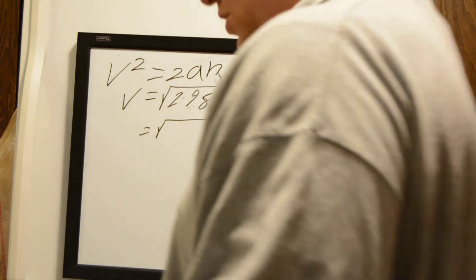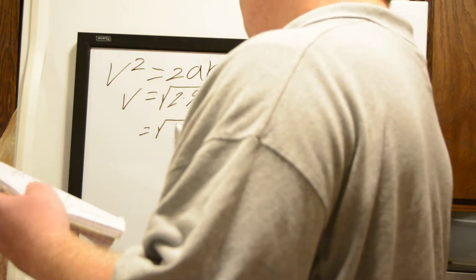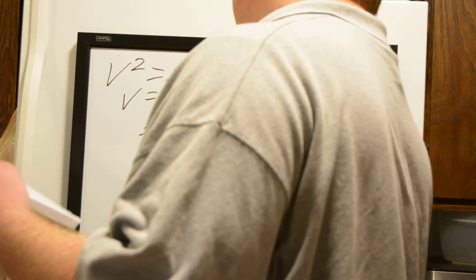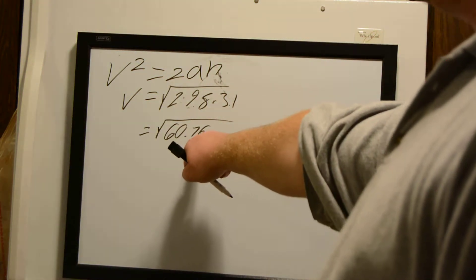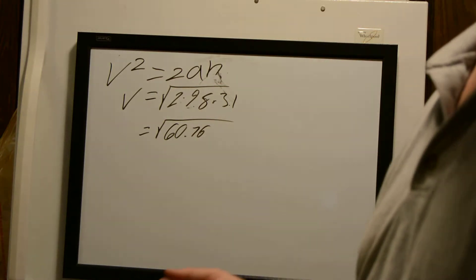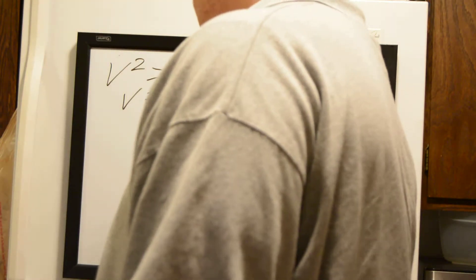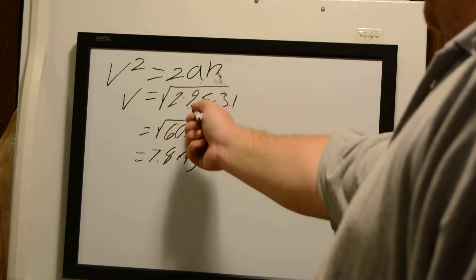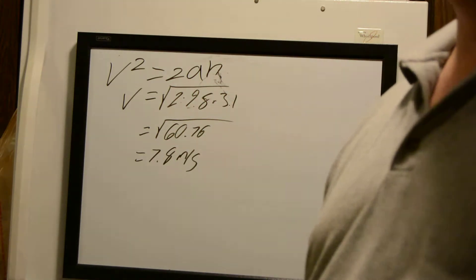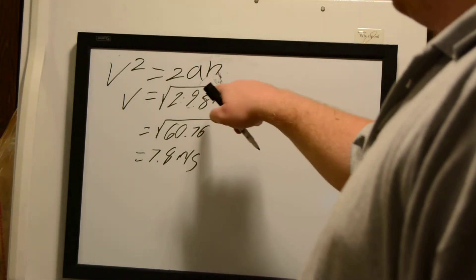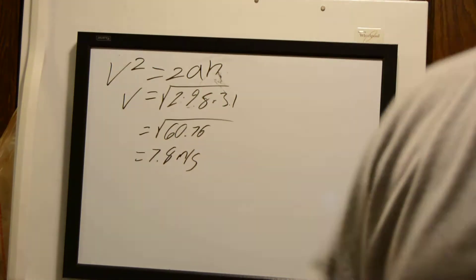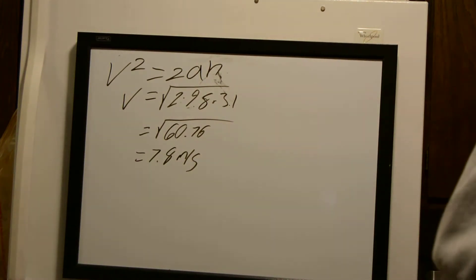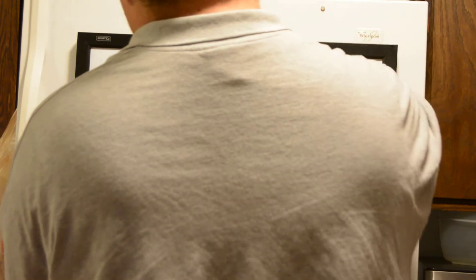Doing the math, that becomes the square root of 60.76. We keep an additional significant figure for accuracy. Taking the square root, we find that his velocity the moment his feet touch the ground is 7.8 meters per second. We express that in two significant figures, since that is the minimum significant figures from our inputs.